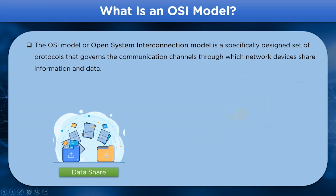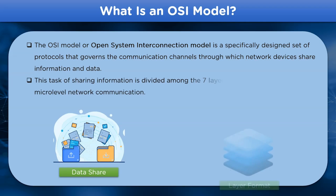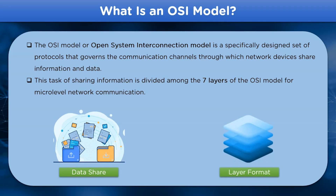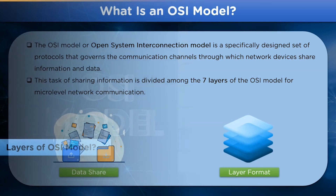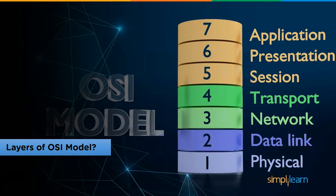The OSI model stands for Open System Interconnection model — a specifically designed set of protocols and standards that governs the modeling and conversion of data for proper transmission over network channels. The OSI model is based on a layer structure consisting of seven different layers, where each layer has a different set of protocols to be applied on the data during transmission over the network channel.